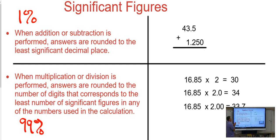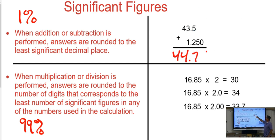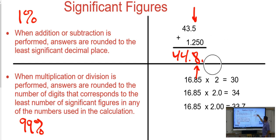When addition or subtraction is performed, answers are rounded to the least significant decimal place. What that means is you find which number has the fewest number of decimal places in it — that would be this 5. There's one decimal place here and three here. So you do the math: 44.750. That's the math answer. Then you say, this is the least significant, so I have to round that value. We round the 5, and that makes the 7 an 8.